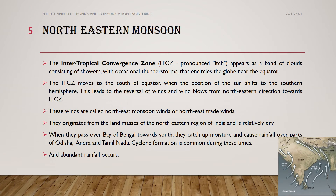There is an Intertropical Convergence Zone (ITCZ), which appears as a band of clouds consisting of showers with occasional thunderstorms that encircle the globe near the equator. When the sun's position shifts to the Southern Hemisphere, the ITCZ moves toward the equator, leading to a reversal of winds that blow from the northeastern direction. These are known as the northeastern monsoon winds, also called the retreating monsoon.